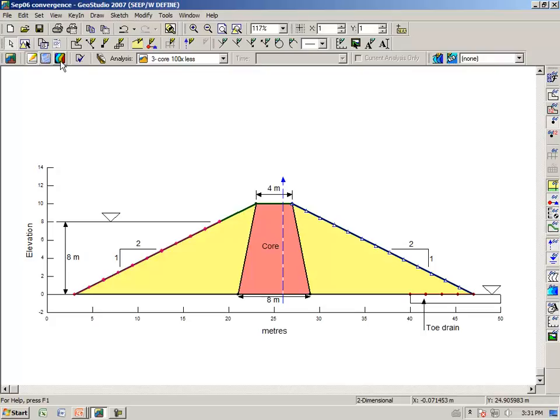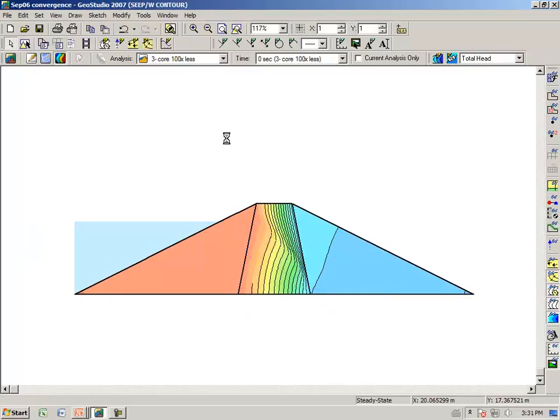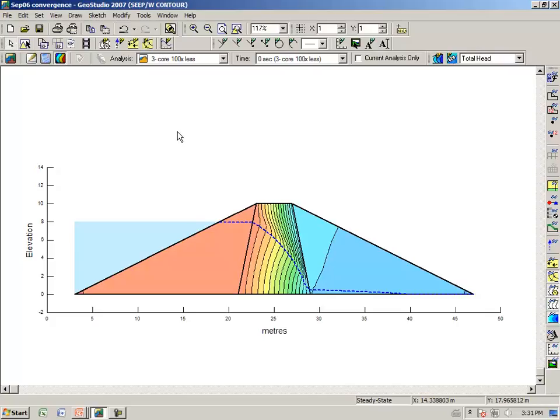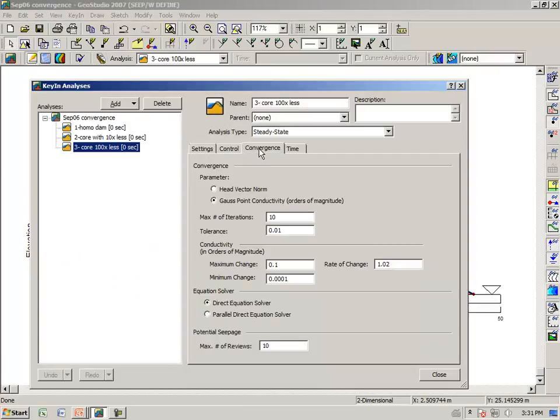If we look at the results, they don't look all that bad in this particular case. However, many times the results are quite scattered. All we are doing here is illustrating the procedure and how to judge convergence. Let's go back to the define view, under key in analysis, under convergence. Let's make it a hundred iterations now and reanalyze the problem.